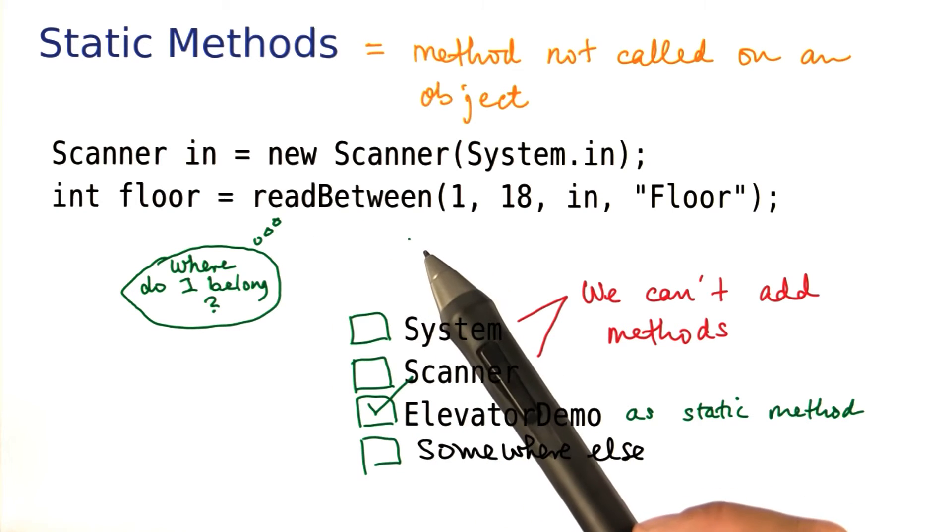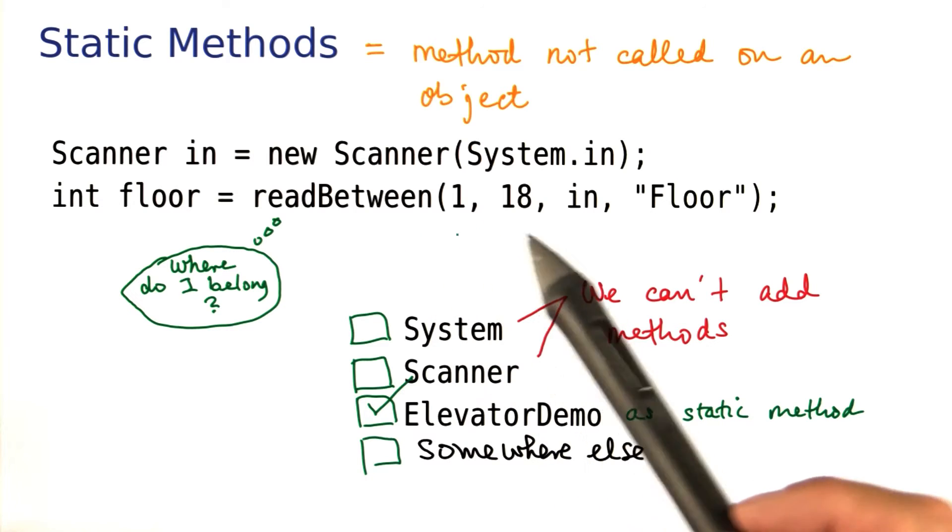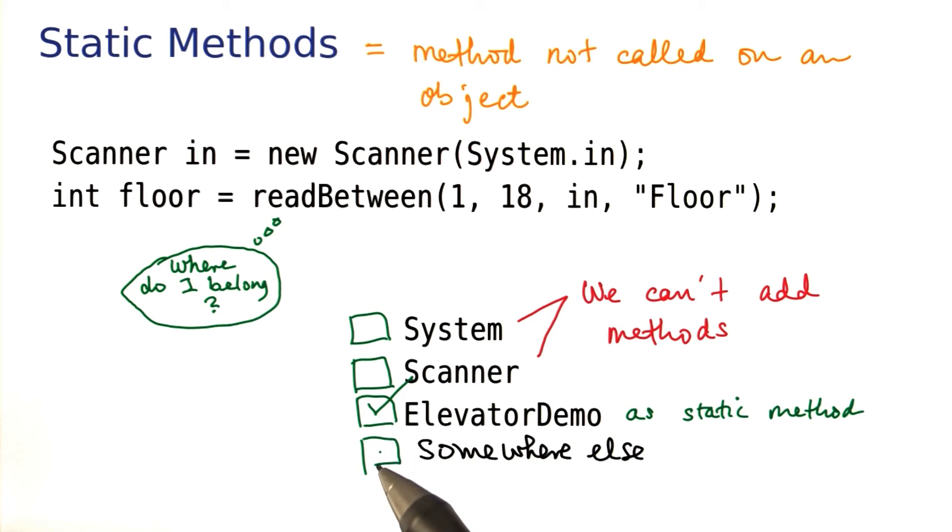Because what if I want to use that perfectly nifty method in another class. So really read between is a method that seems it would be useful in any situation that you want to read a value from some range. So we might really want to put this somewhere else.